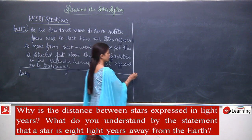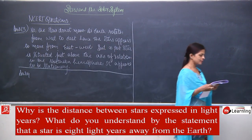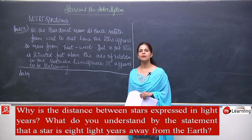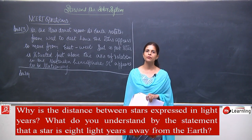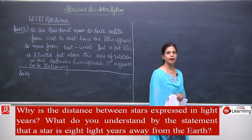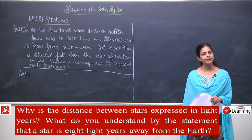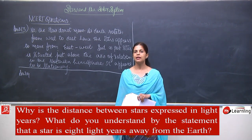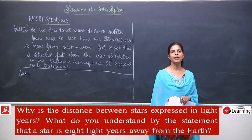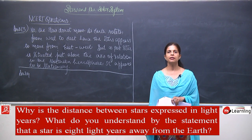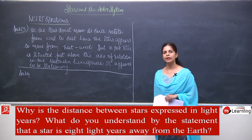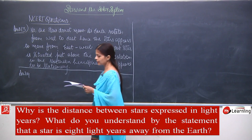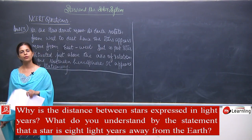What is question 14? Why is the distance between stars expressed in light years? We know that the distance between any two celestial bodies is very high, and so it cannot be calculated in kilometers or any such unit. A bigger unit has to be taken. One light year is the distance travelled by light in one year, which is a huge distance. The second part asks: what do you understand by the statement that a star is eight light years away from the earth?